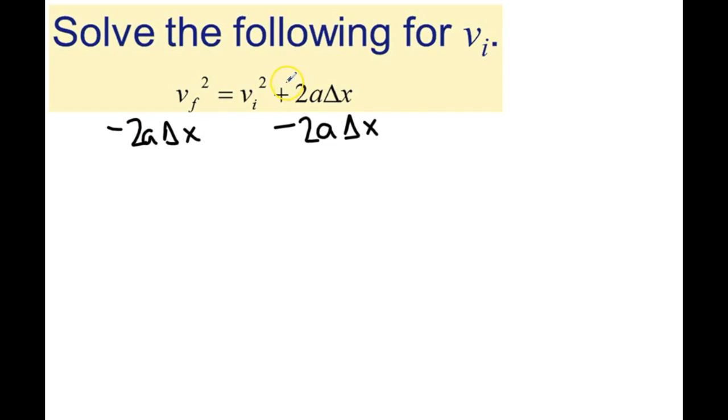Then the 2a delta x's go away on the right side, and you're just left with v final squared minus 2a delta x equals v i squared.